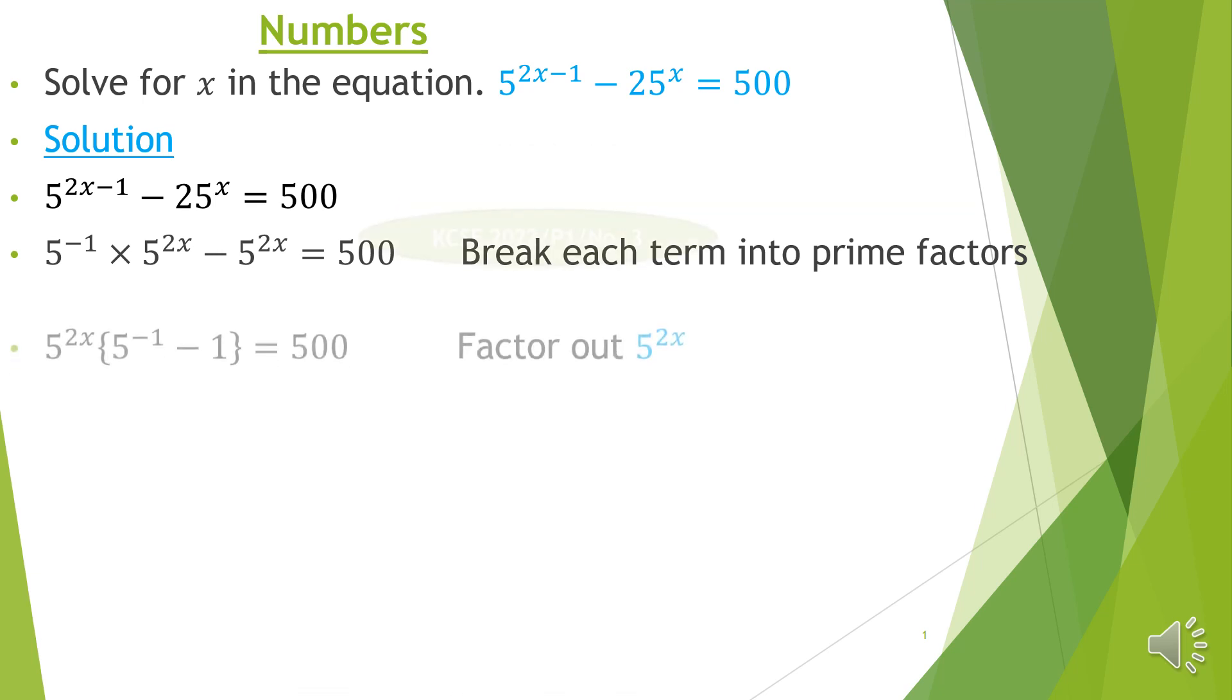Then secondly, we'll factor 5 raised to 2x outside on the left hand side because it is common on both numbers. And therefore factoring it out, we remain with 5 raised to negative 1 minus 1 equals 500.